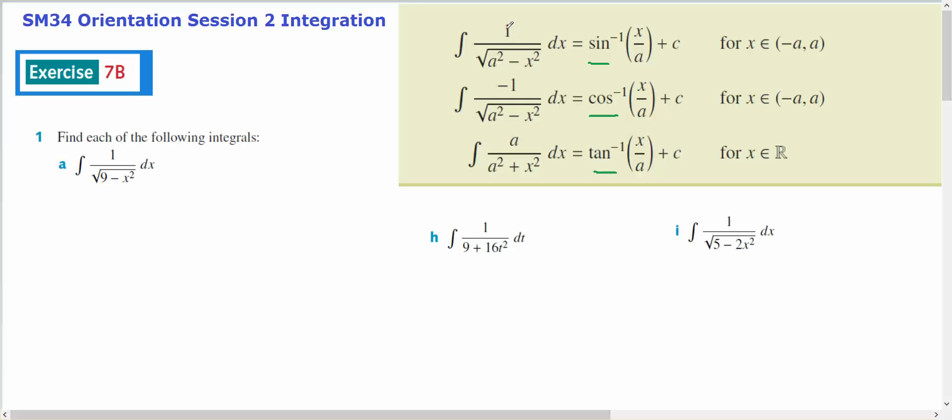Looking at this, when I've got 1 on top of the square root of a squared minus x, it's an inverse sine. Negative 1 on top of the square root of a squared minus x is a positive inverse cosine, and a over a squared plus x squared. Here I've got 1 on top of the square root, so positive 1, so I'm looking at this particular answer.